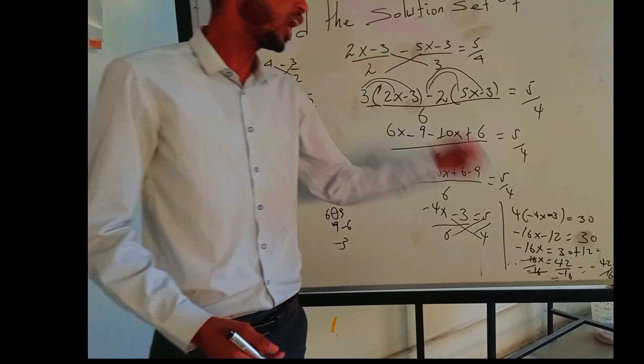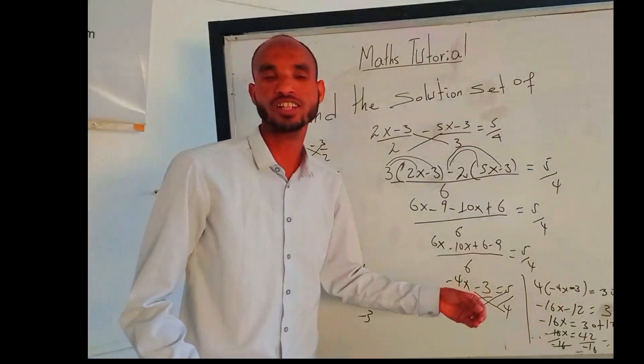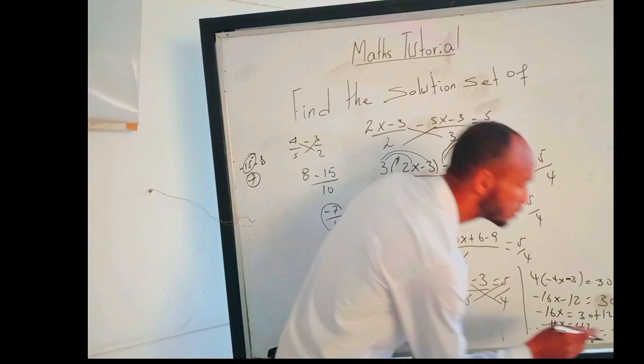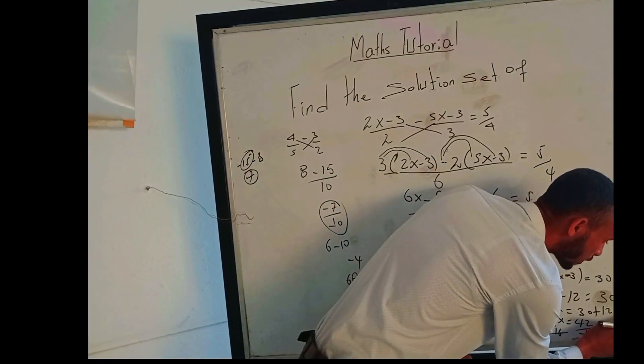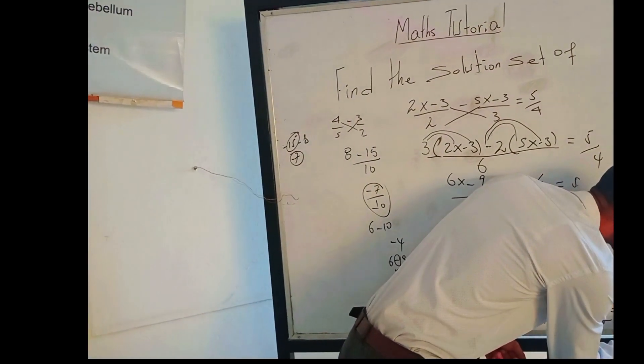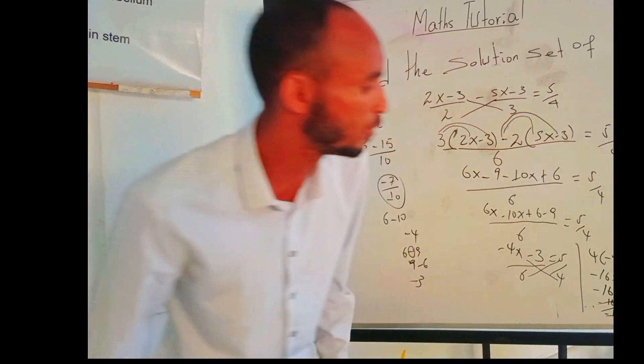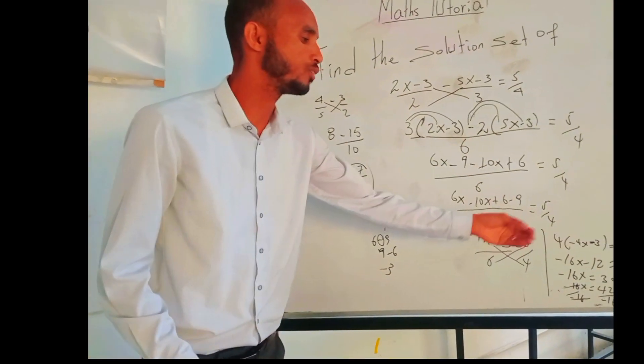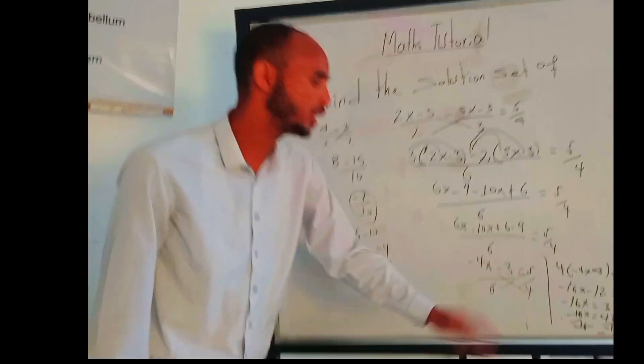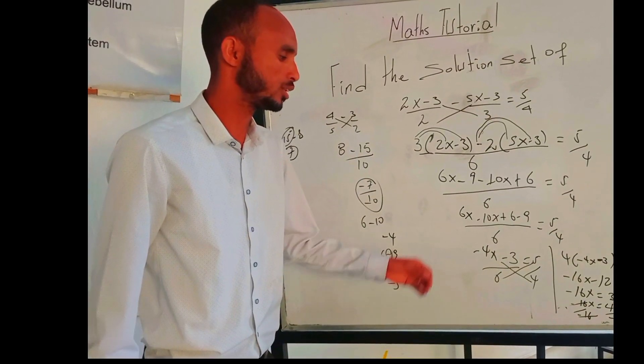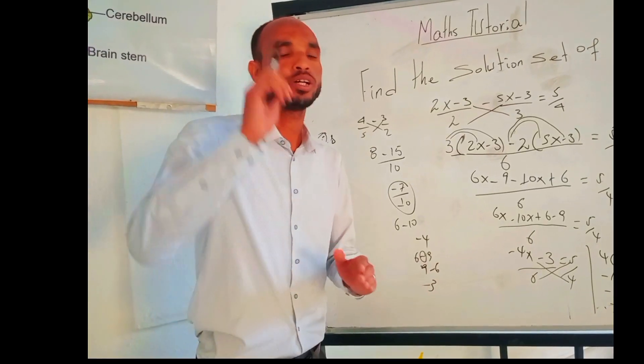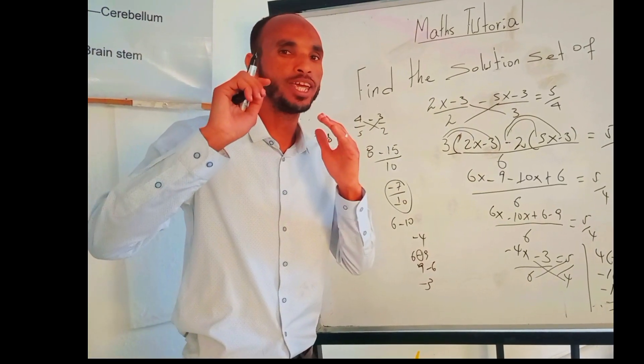That means -21/8 for the simplest expression, because any equation, any fraction, finally you have to always put the simplest form. So the answer is -21/8. This is all about how to solve the linear equation. Until next time, goodbye.